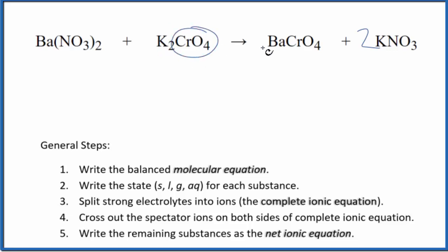We have two potassiums here. We have the chromate ion here and here. Then we have a barium here and here. This is the balanced molecular equation.